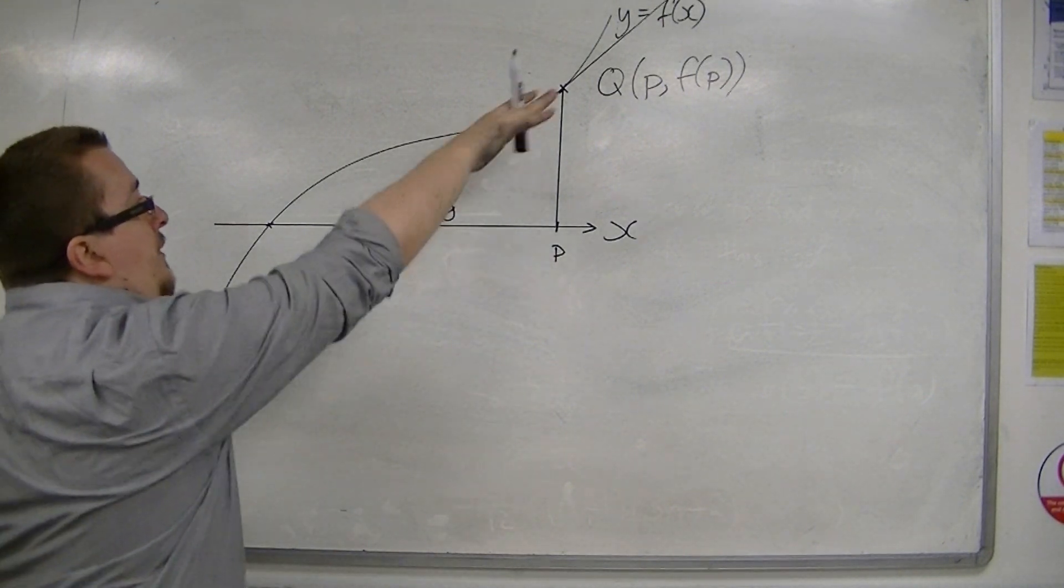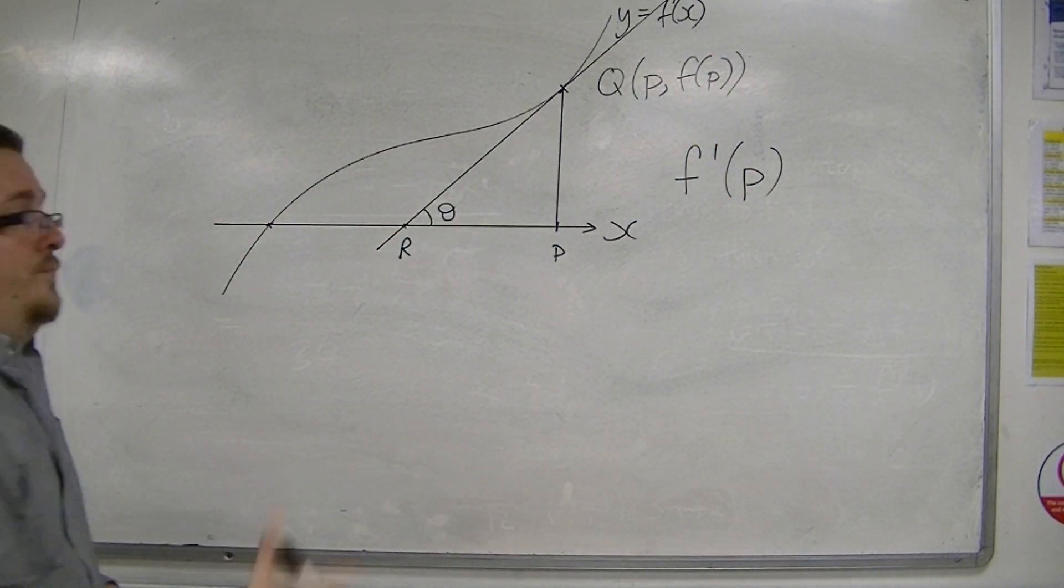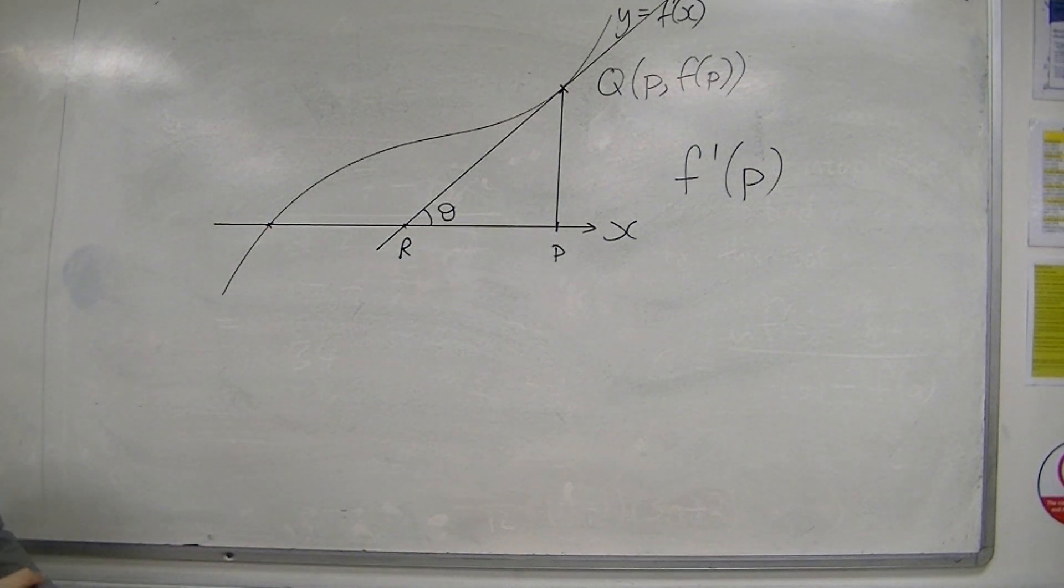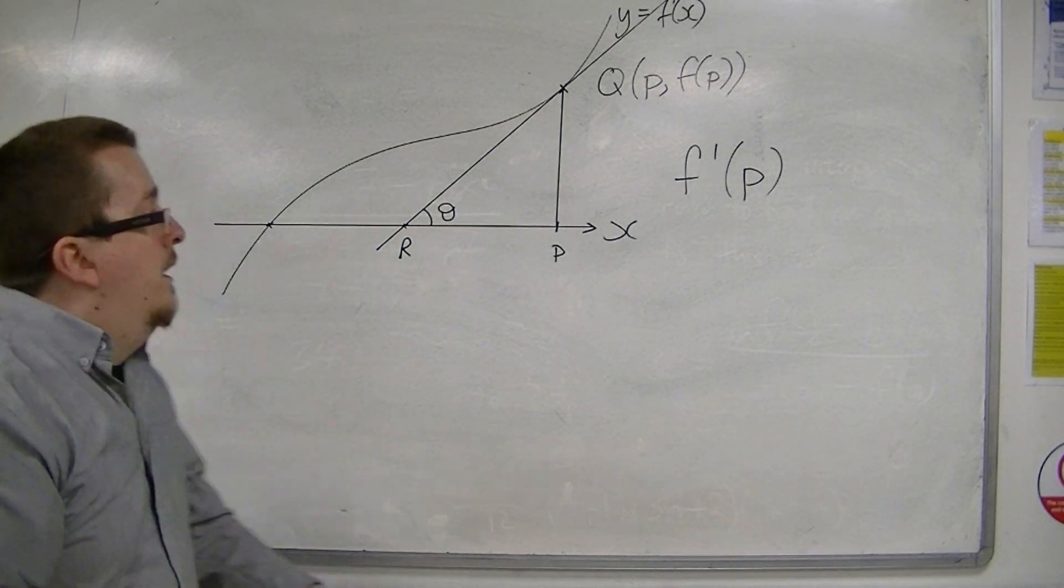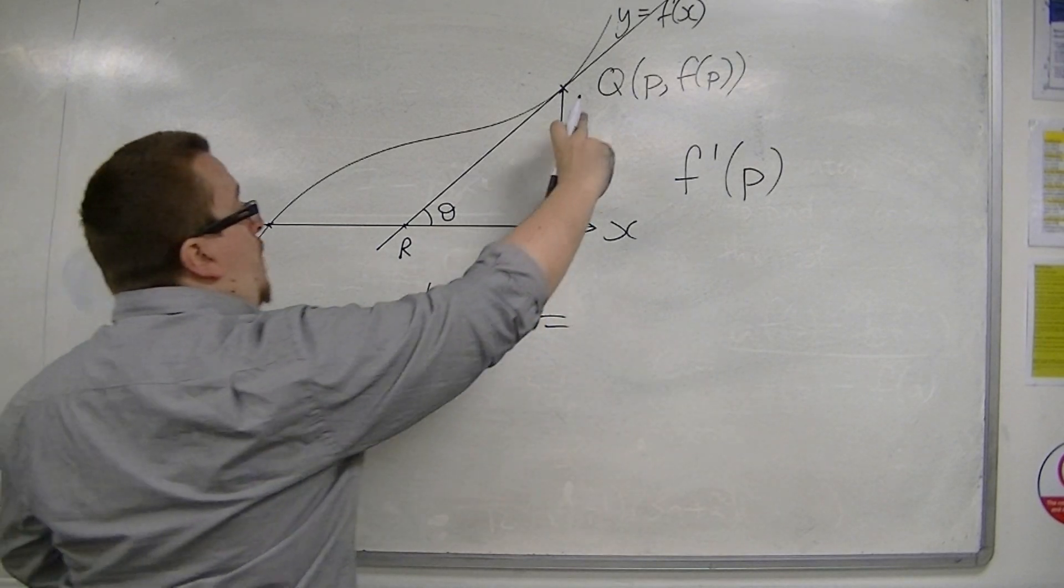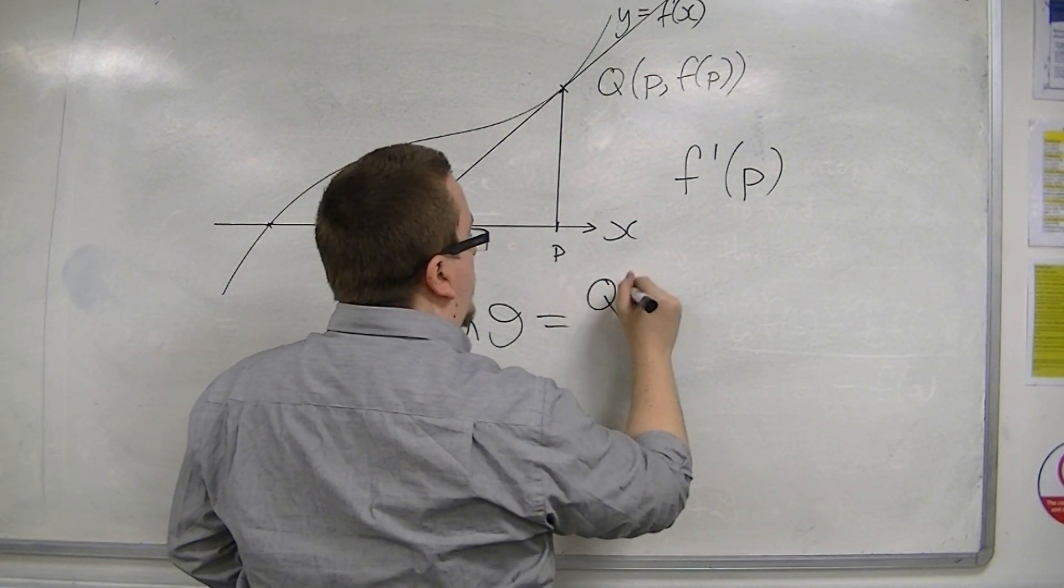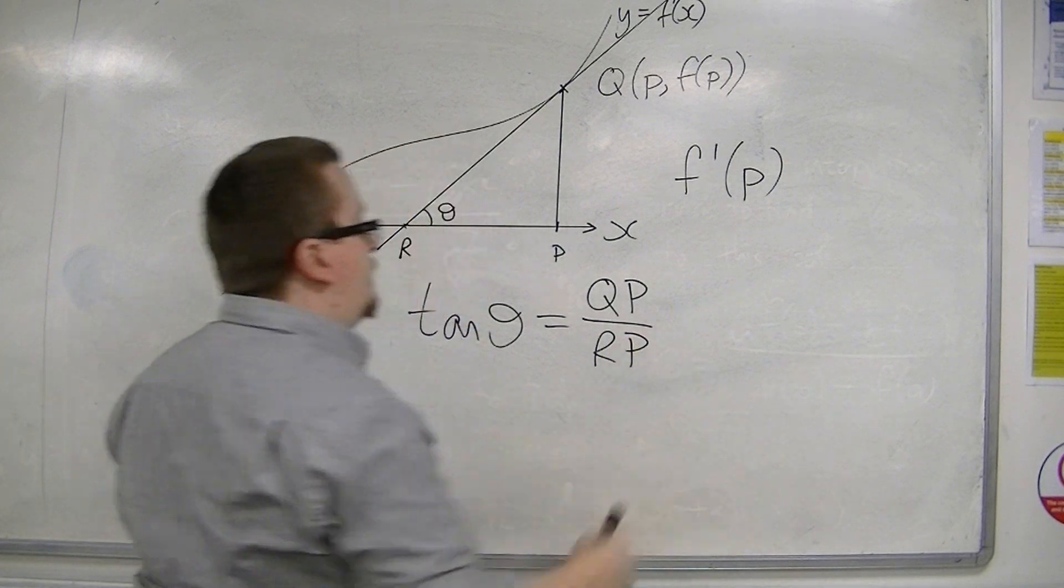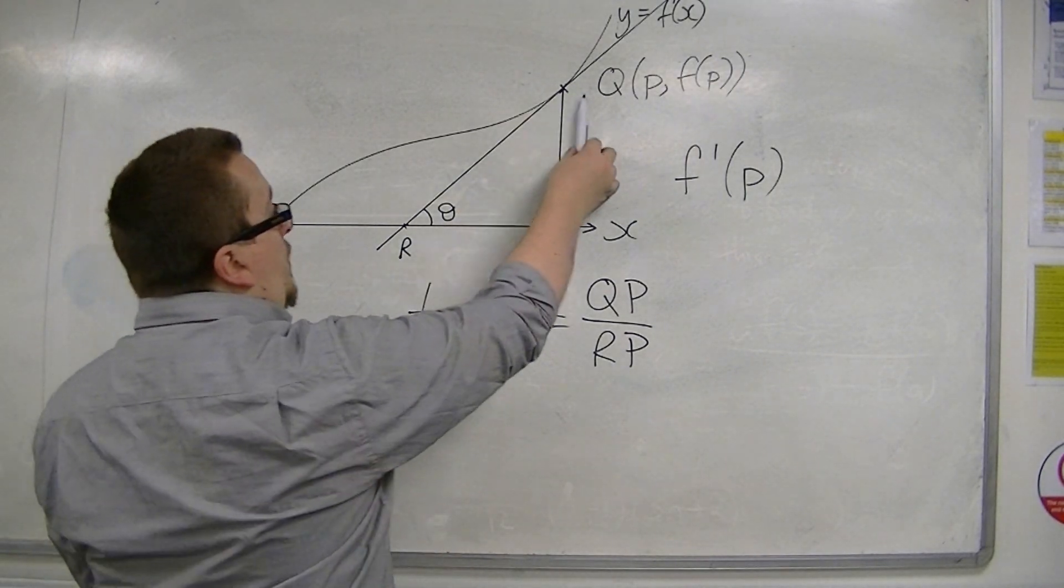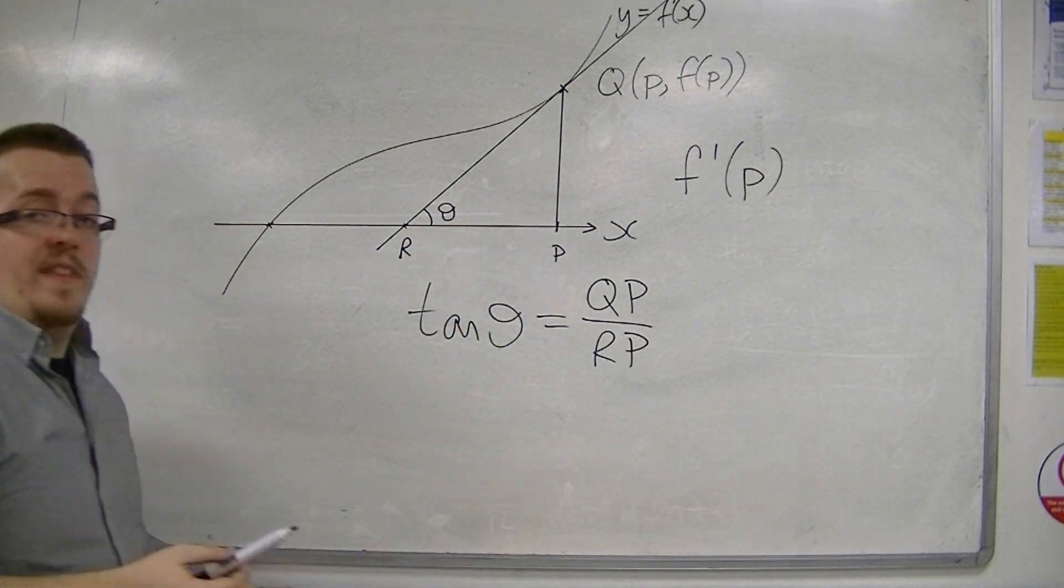The gradient of this line is going to be f prime of P. So if I'm substituting P into the first derivative, that will give me the gradient of the tangent. I could also express it as tan theta is equal to the opposite over the adjacent. So tan theta is QP over RP.